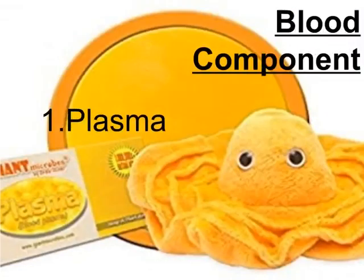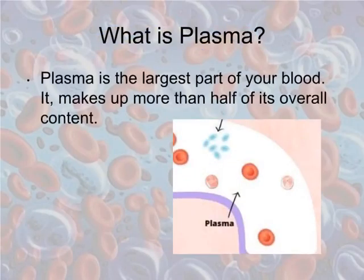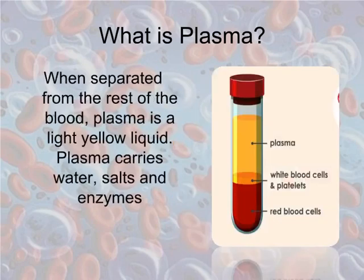First is plasma. Plasma is the largest part of your blood, making up more than half of its overall content. When separated from the rest of the blood, plasma is a light yellow liquid. Plasma carries water, salts, and enzymes.